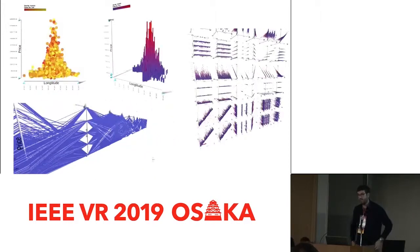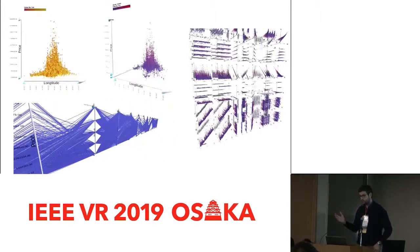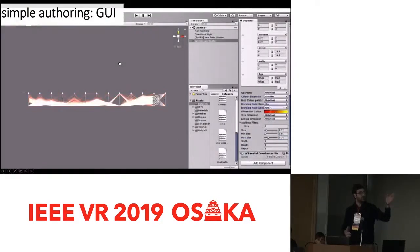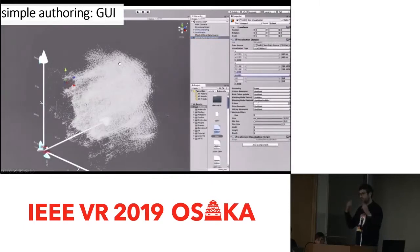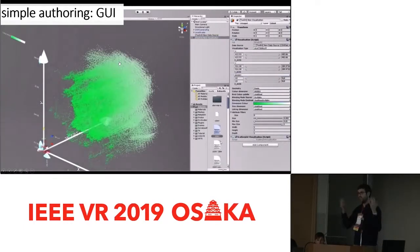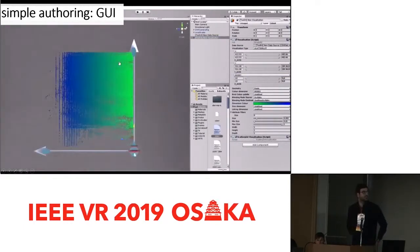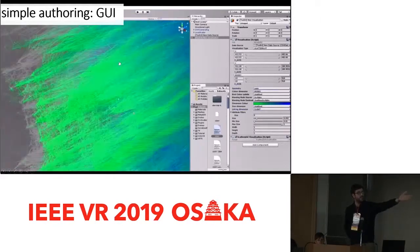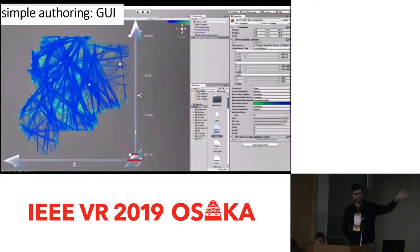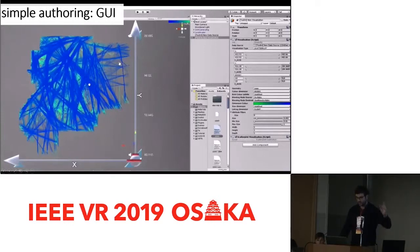IATK is a data visualization toolkit actually available through the editor, so simply by using the same type of interaction, we can create a lot of different types of visualization and easily recreate this kind of large data set visualization that we use in Fiber Clay, just by using drag-and-drop interactions.